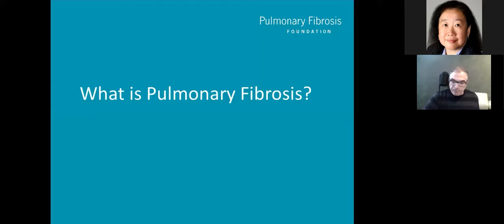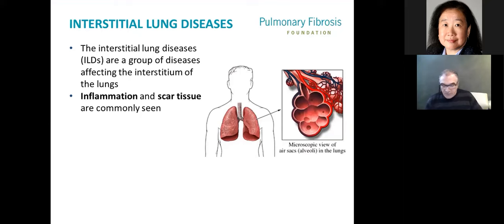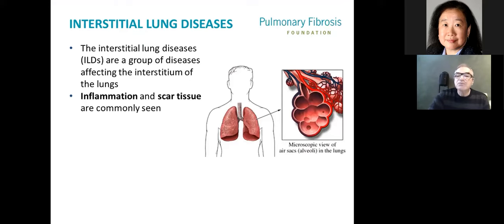So what is pulmonary fibrosis? I have a few diagrams to help depict the interstitial space. The first diagram provides a blow-up view at microscopic levels where the tiniest airways terminate and the little air sacs begin. You can see the air sacs delivering air down to the very end of the airway, and then the little air sacs here at the very end of the lung where the air ends. These little air sacs are called alveoli.